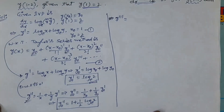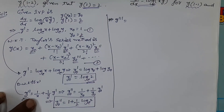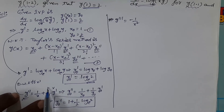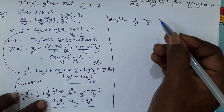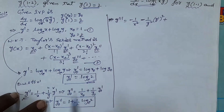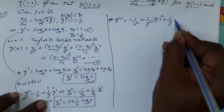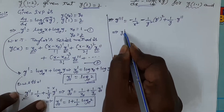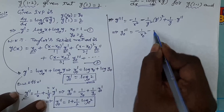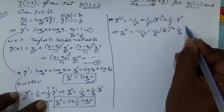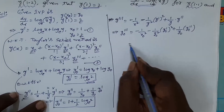Now find the third derivative. The derivative of 1/x is −1/x². For the second term, apply the product rule (uv rule): derivative of (1/y)·y' gives −(1/y²)·(y')² + (1/y)·y''. So y₀''' = −1/x₀² − (1/y₀²)·(y₀')² + (1/y₀)·y₀''.